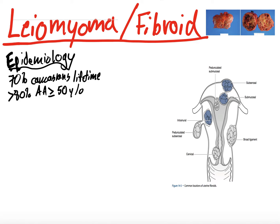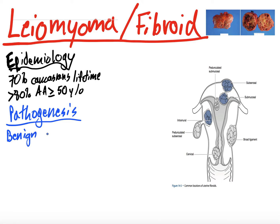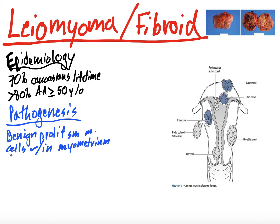What are fibroids? The pathogenesis: these are benign — hence 'myoma' — a benign proliferation of smooth muscle cells within the myometrium. They are hormonally responsive; they have estrogen receptors and progesterone receptors, which is important when we talk about treatments for them.